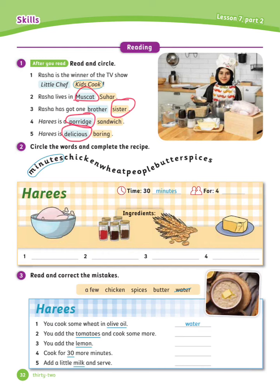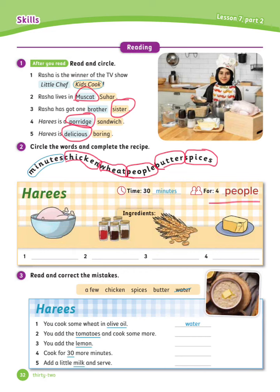Let's circle the words first. Now let's complete the recipe. Time is done for you: 30 minutes. For people. The ingredients are: chicken, spices, wheat, and butter.